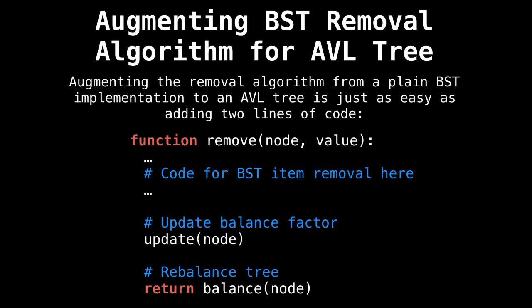The moment we've been waiting for: how do we augment the binary tree removal algorithm for AVL trees? The solution is simple. You only need to add two lines of code to ensure that the tree remains balanced and that the balance factor and height values remain up to date. On the recursive callback, you invoke the update and balance methods you saw in the insert video, which ensure that when the node is removed from the AVL tree, the tree remains balanced. It's as easy as that.